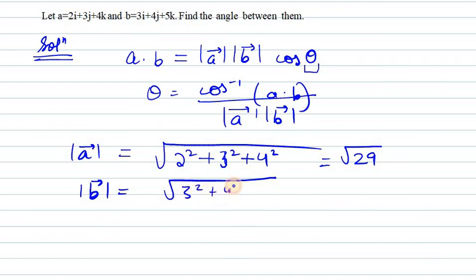Now we need to find the magnitude of b. So b can be written as 3 square plus 4 square plus 5 square, which is under root 50. Neither of them can be reduced, so I will keep the values as it is.